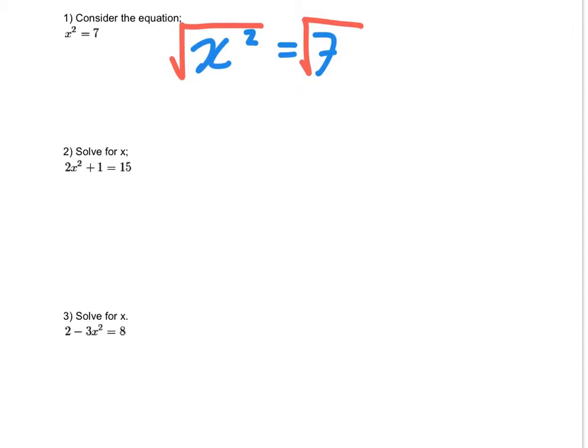So the square root and the squaring cancel each other, and you're left with x equals. Now it's the square root of 7, but we say plus or minus. Because remember, square roots are the positive and negative. For example, if you have the square root of 9, the square root of 9 can be 3, or it can also be minus 3.